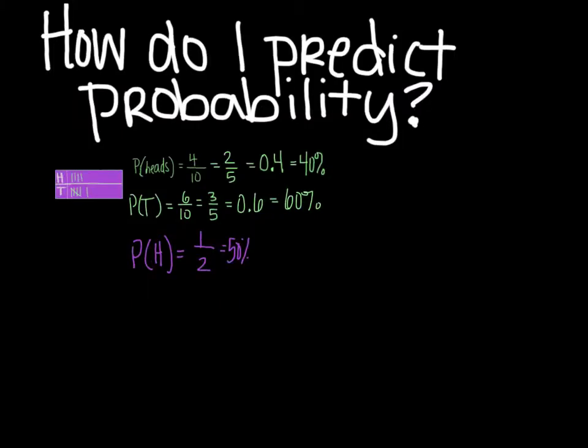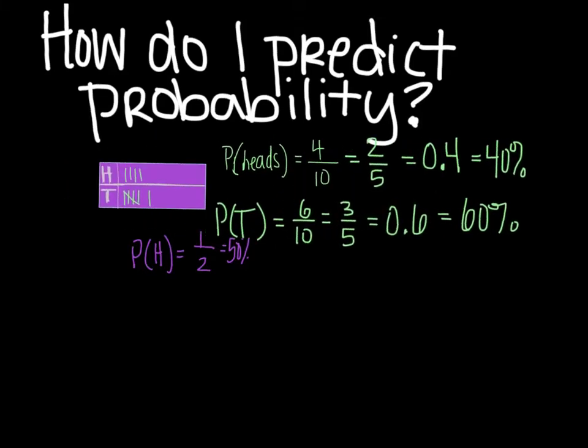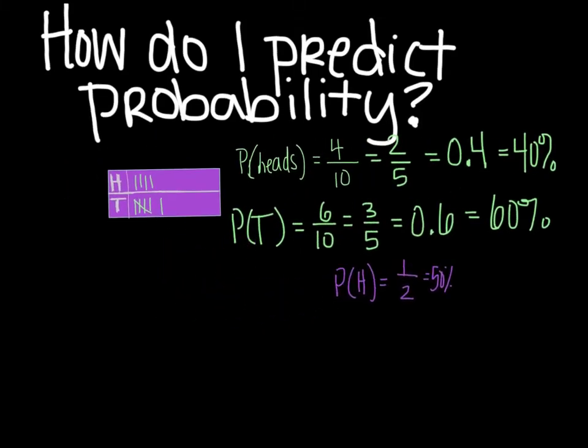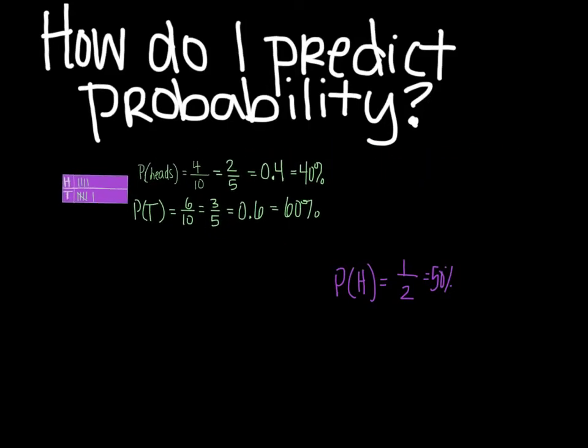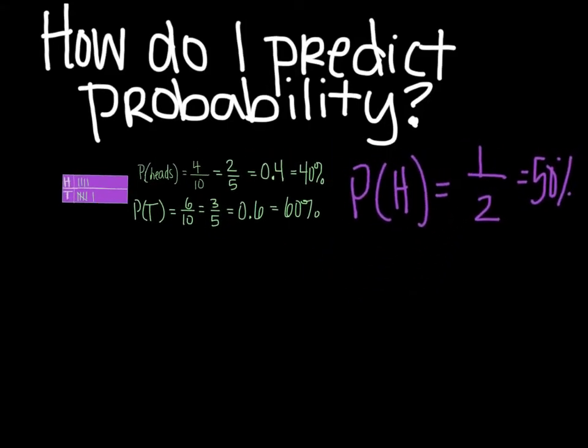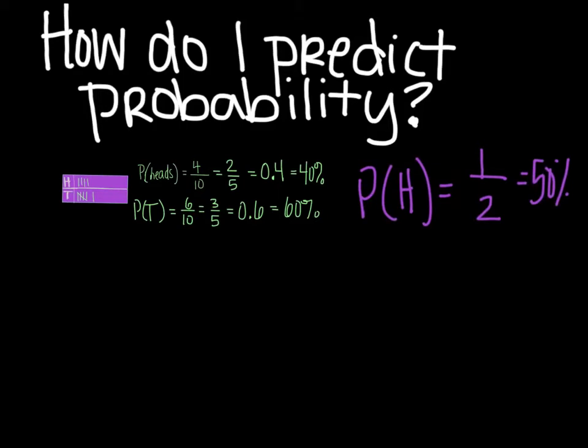So how do you predict probability? That's the question. I have here the experimental probabilities from when I tossed the coin in the last video. So here we had the probability of heads and the probability of tails experimentally. And then obviously for both heads and tails, the theoretical is one half. And so I'm going to take that and find other probabilities. In other words, I'm going to predict probabilities.